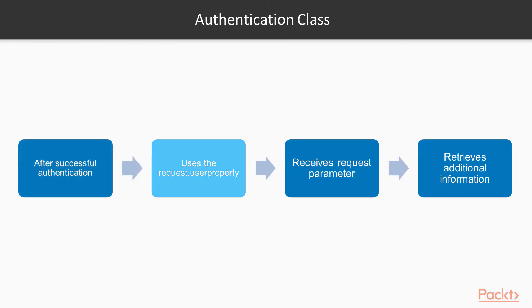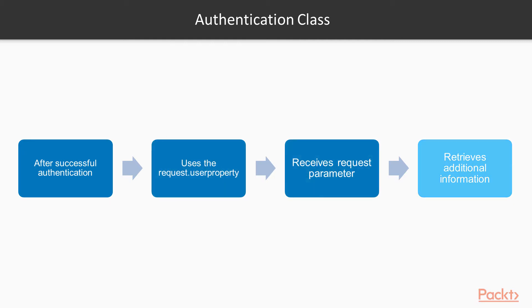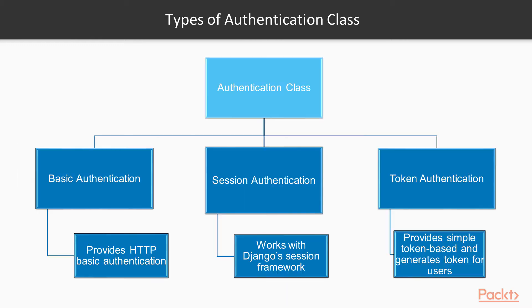After a successful authentication, we can use the request.user property in our class-based view methods that receive the request parameter to retrieve additional information about the user that generated the request. Django REST framework provides three authentication classes in the rest_framework.authentication module.